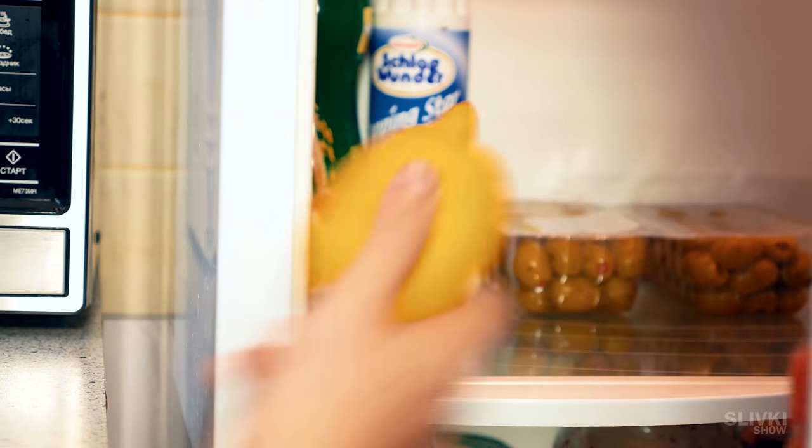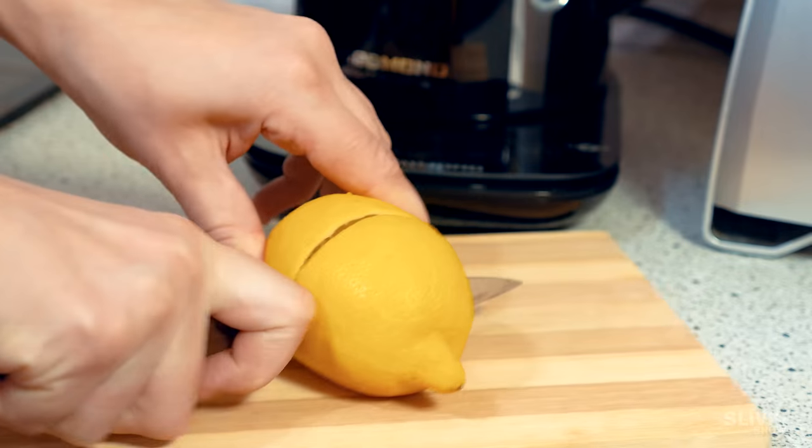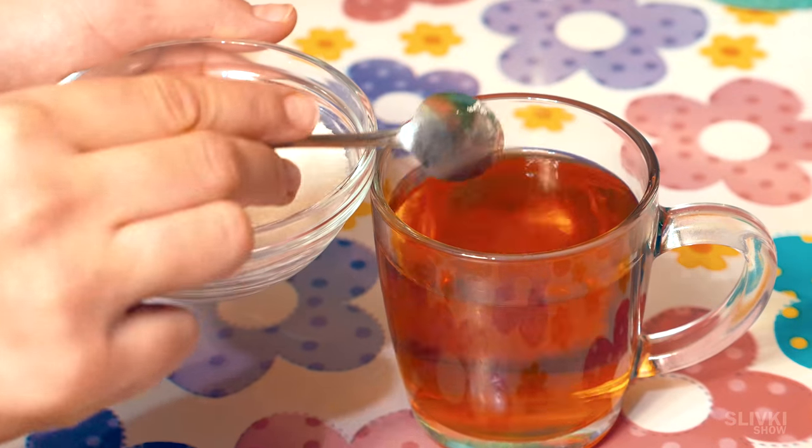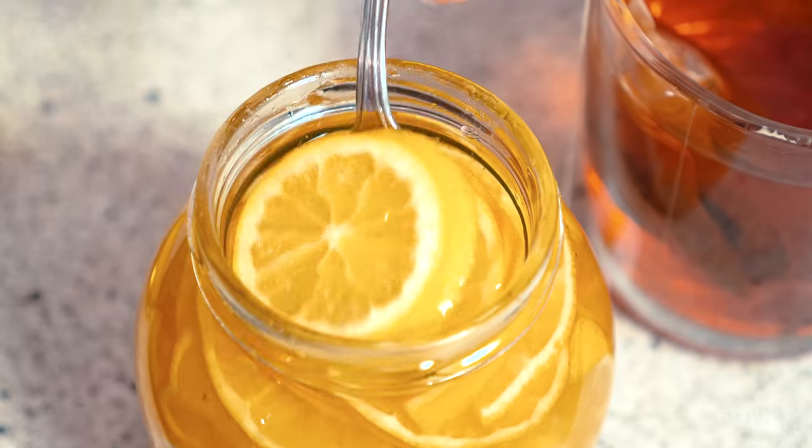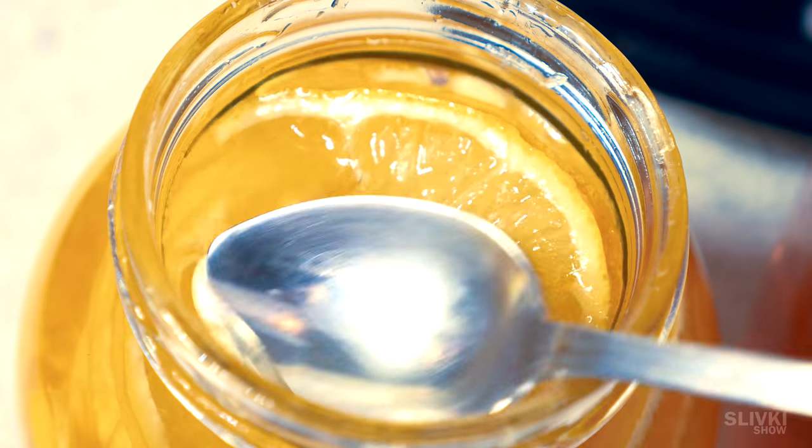You don't have to get lemon out of the fridge every time, slice a piece, wash the knife and then add sugar. After making tea, you just take a piece of lemon from the jar and instead of sugar, use lemon syrup.